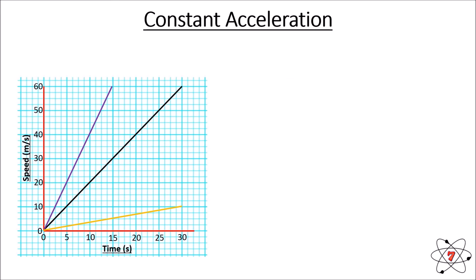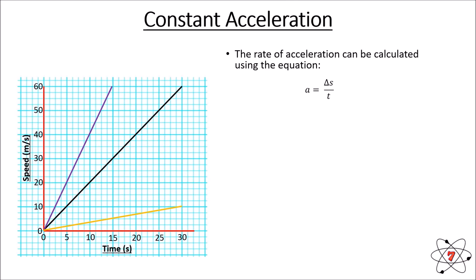Now let's look at how we calculate constant acceleration on a speed-time graph. The rate of acceleration can be calculated using the equation: acceleration equals change in speed divided by time, or a = (v − u) / t — either version is fine, they mean the same thing. We have three lines here — we'll call them A, B, and C — and we're going to calculate the rate of acceleration for each one. We draw a triangle to find the time and the change in speed, and just like last lesson we draw these triangles as large as possible to reduce error.